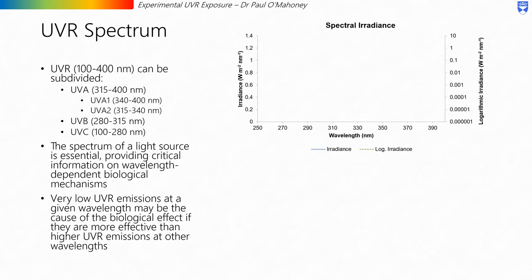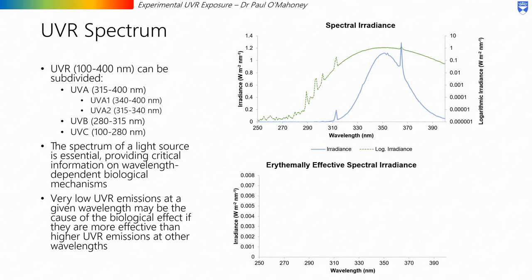If we consider the spectrum of this light source, we can clearly see the shape of the source with two very obvious peaks around 315 and 365 nanometers. It can be important then to plot the logarithmic spectrum, where we can see smaller peaks towards a shorter wavelength range. This is important because very low UVR emissions at a given wavelength may be the cause of a biological effect if they are more effective than the higher UVR emissions at other wavelengths. Taking the example of erythema, if we multiply this spectrum by the erythema action spectrum, we find that these lower wavelength peaks may often be more effective at producing erythema than the higher wavelength peaks that are more prominent in the spectral irradiance graph.